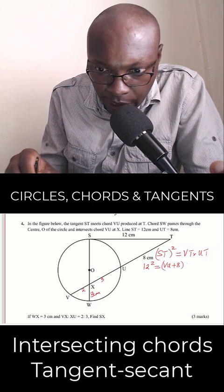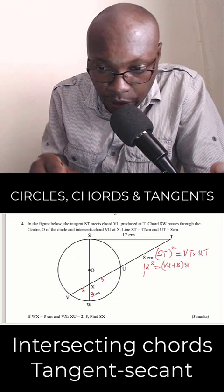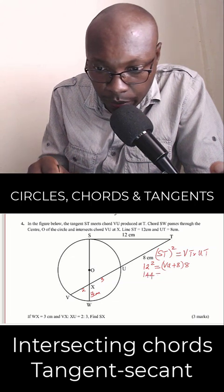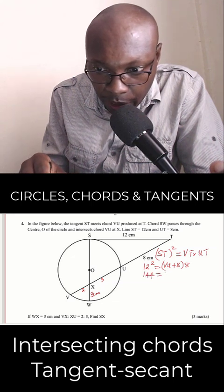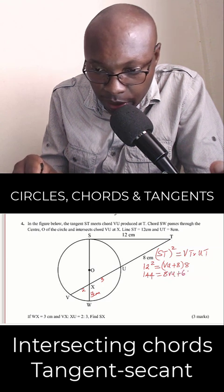Then multiply by UT, which is 8. So this is 12 squared, you get 144 equals 8 multiplied by VU, you get 8VU, then plus 8 times 8, you get 64.